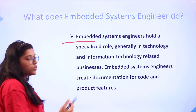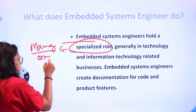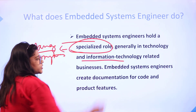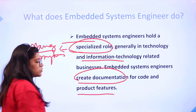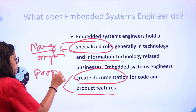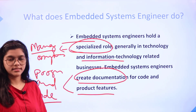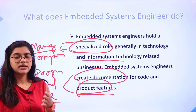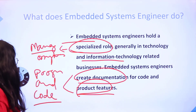You hold a specialized role with management of all associated systems, covering information technology from a business perspective as well. Embedded systems engineers also create documentation for code and product features — meaning they should know programming and writing efficient code for smooth system functioning. A properly documented code helps users and clients understand how the system or application is being processed.